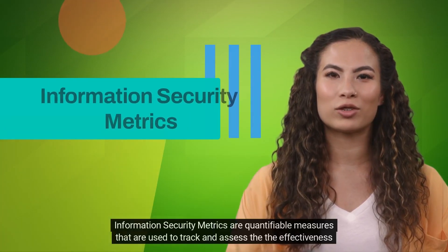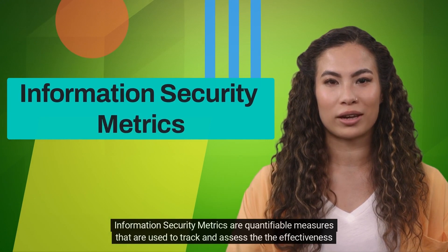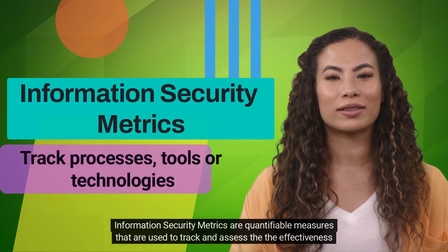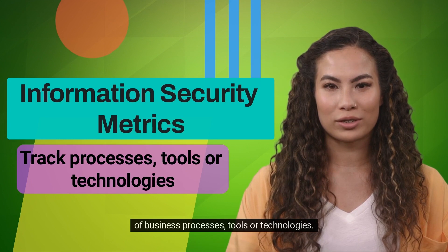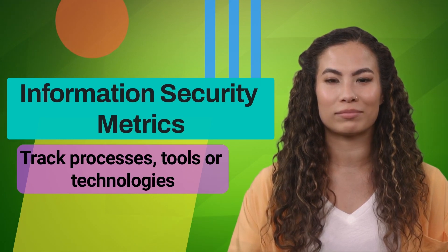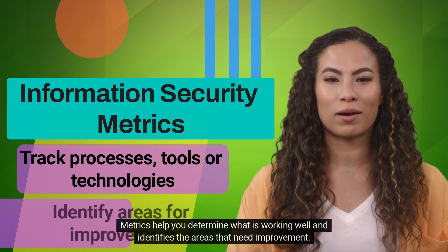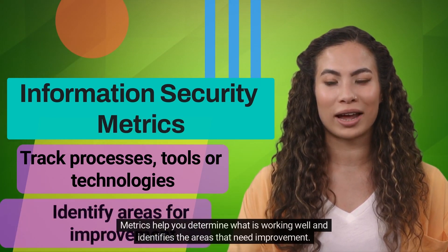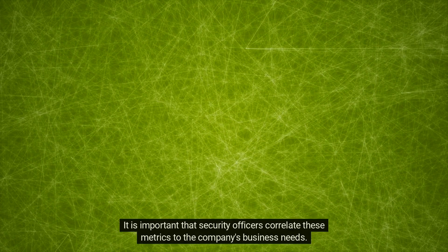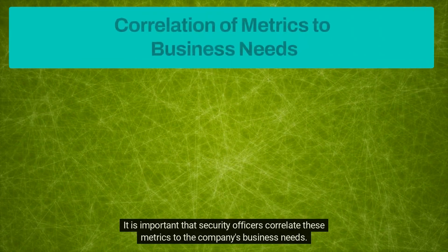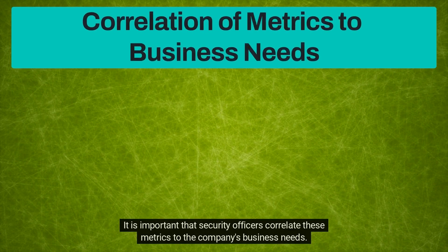Information security metrics are quantifiable measures that are used to track and assess the effectiveness of business processes, tools, or technologies. Metrics help you determine what is working well and identify the areas that need improvement.